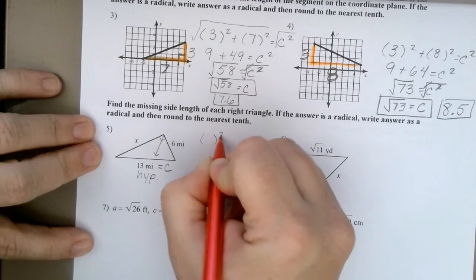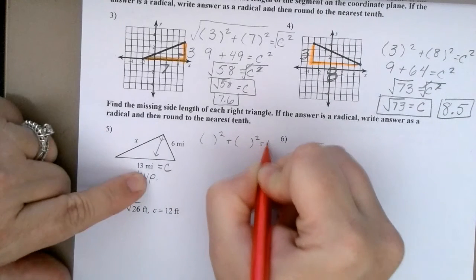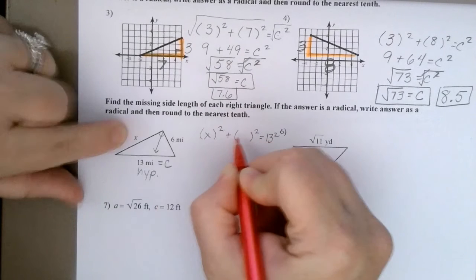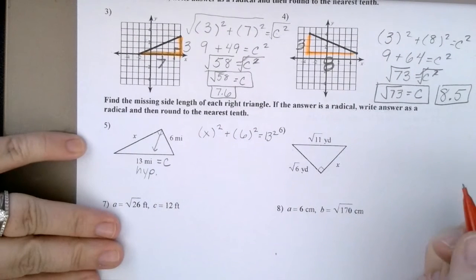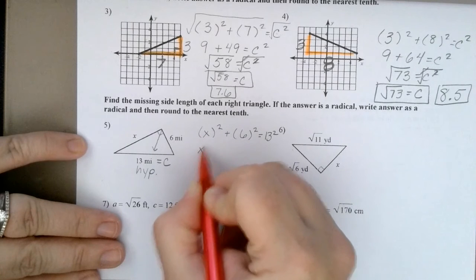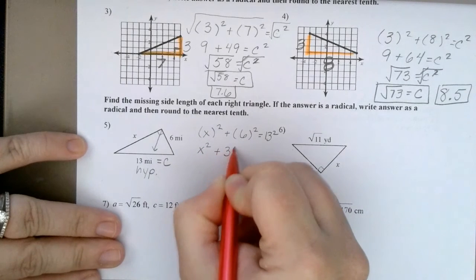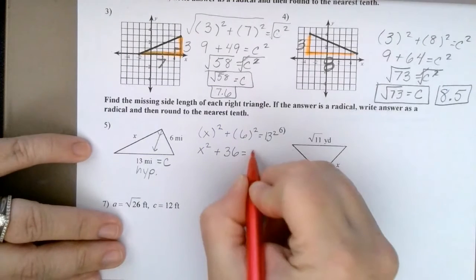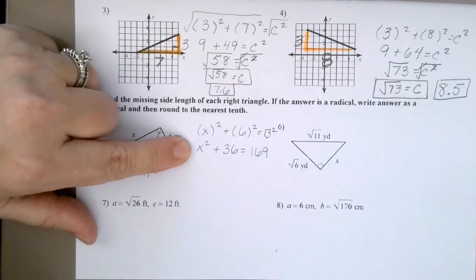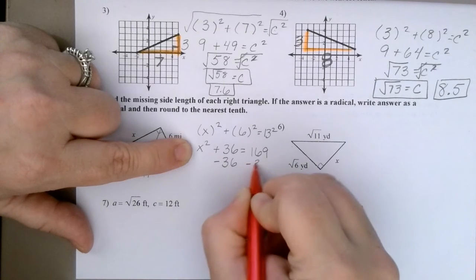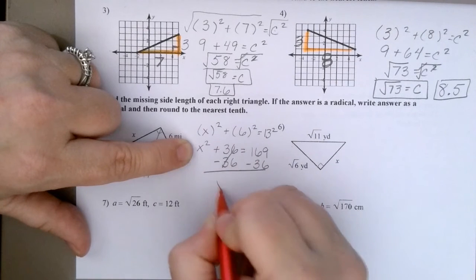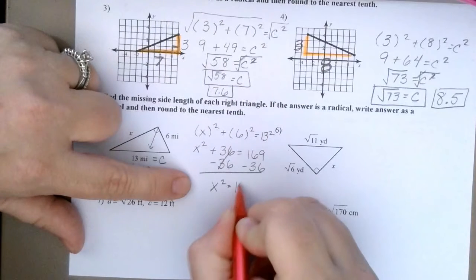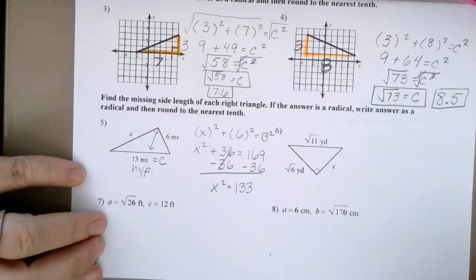So something squared plus something squared is equal to 13 squared. What are my other somethings, my A and B? One of them is X and one of them is 6. So let's square these. X squared is obviously X squared. What's 6 squared? 36. And 13 squared? 169. How do I solve this equation? Subtract 36. Right? I have to get those together before I can worry about taking a square root of something. So 169 minus 36 is 133.